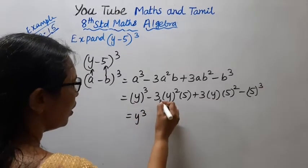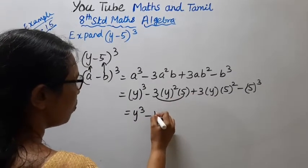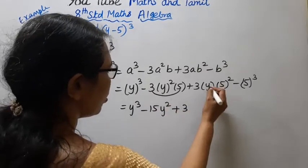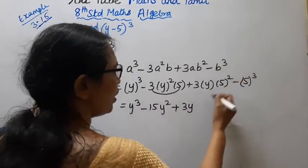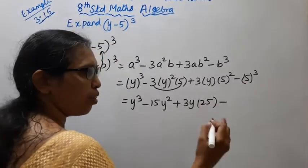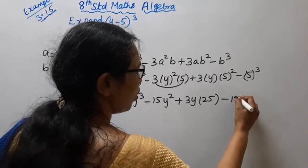Y cube, 3 into 5 minus 15 Y square, plus 3 into Y, 3Y, Y cube, 5 square 5. 5 is 25, 25 is 125.